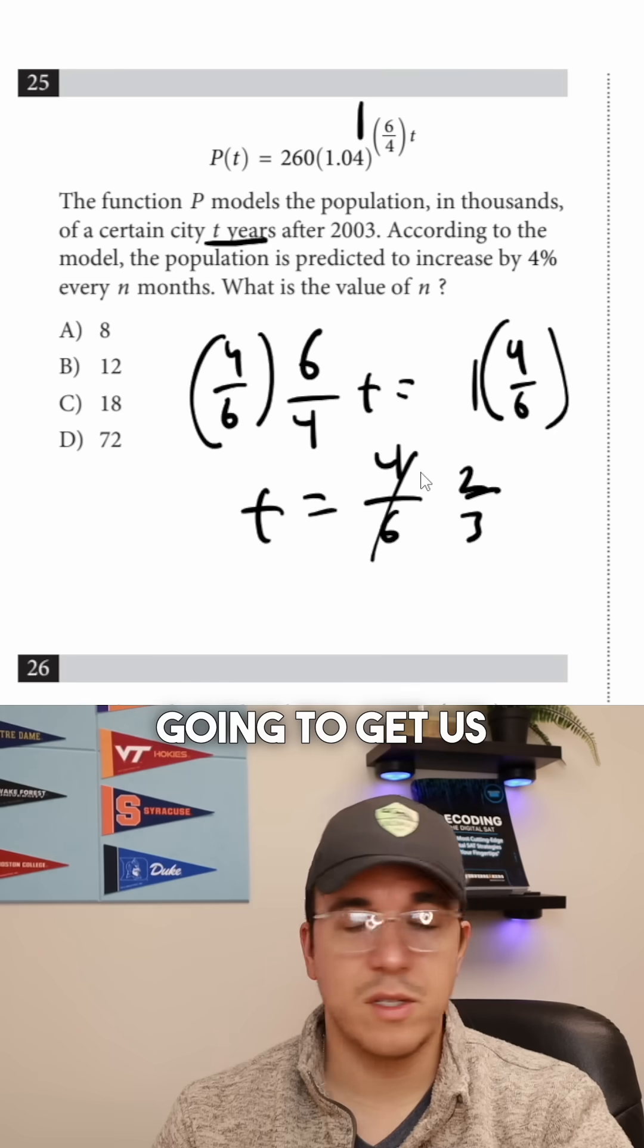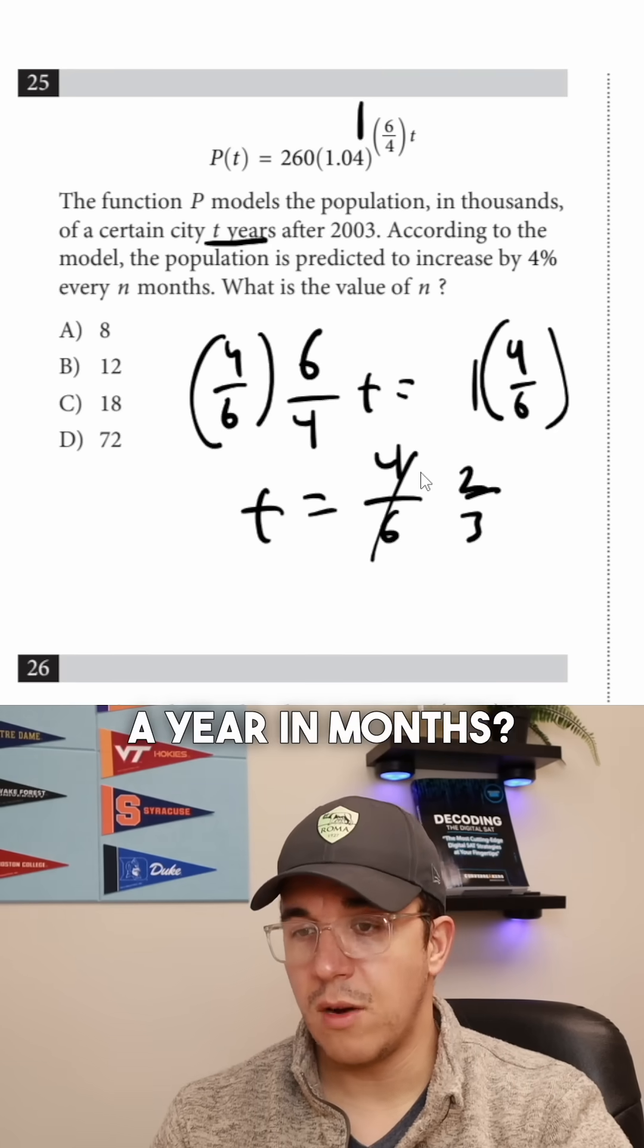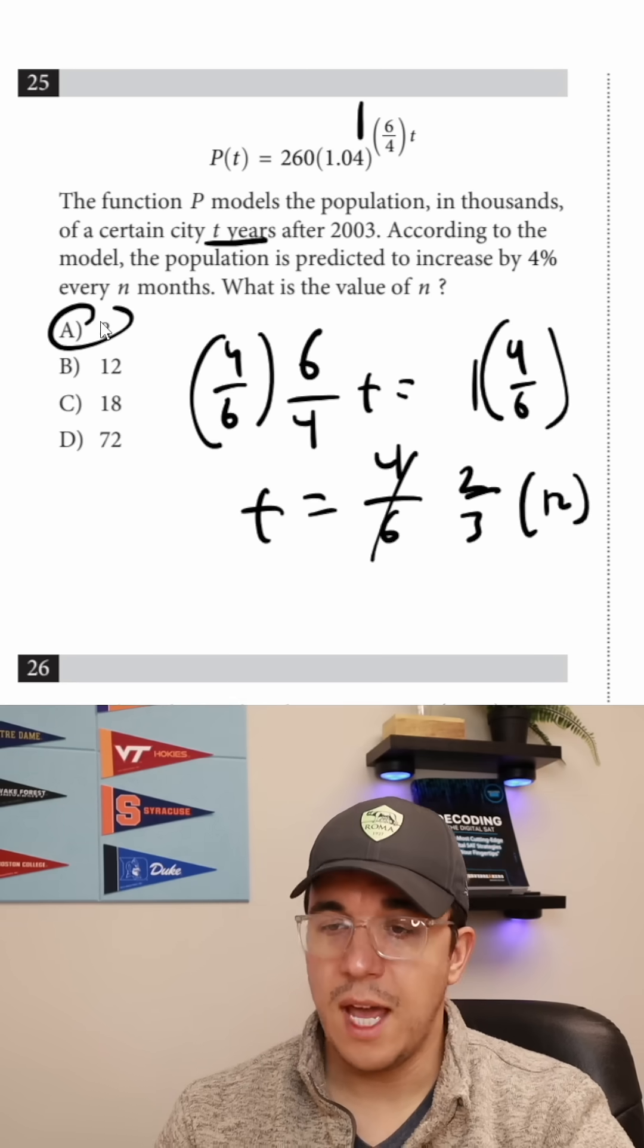So 2/3 of a year is going to get us a 4% increase. So now what is 2/3 of a year in months? Well, we just need to do 2/3 times 12, and then we get the correct answer, which is A, 8.